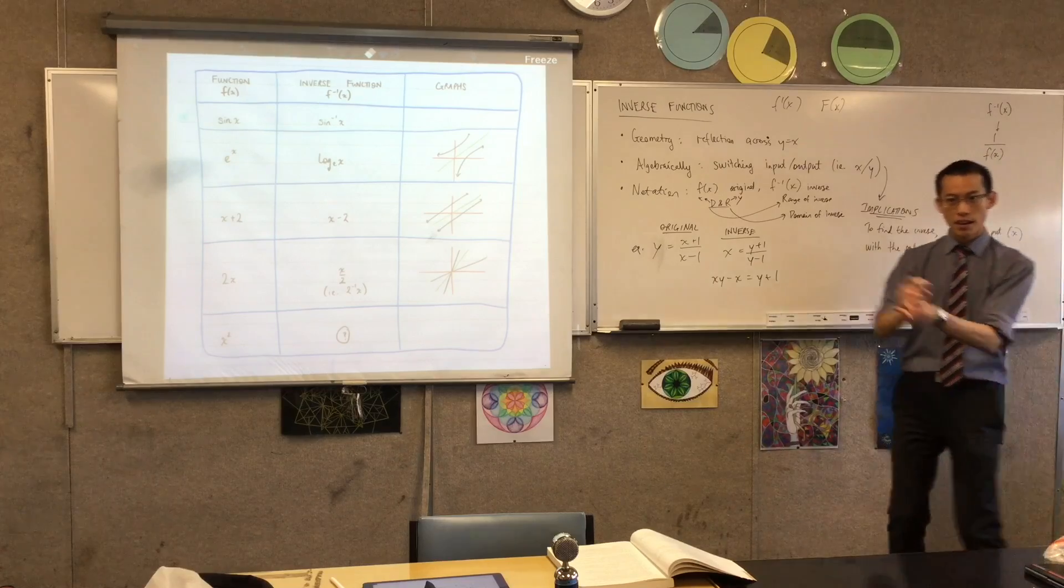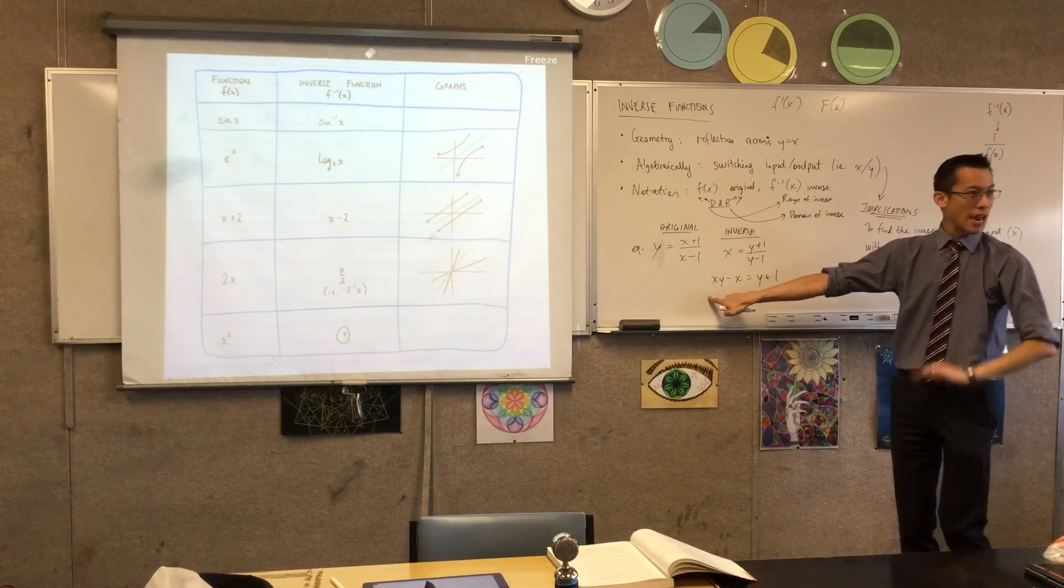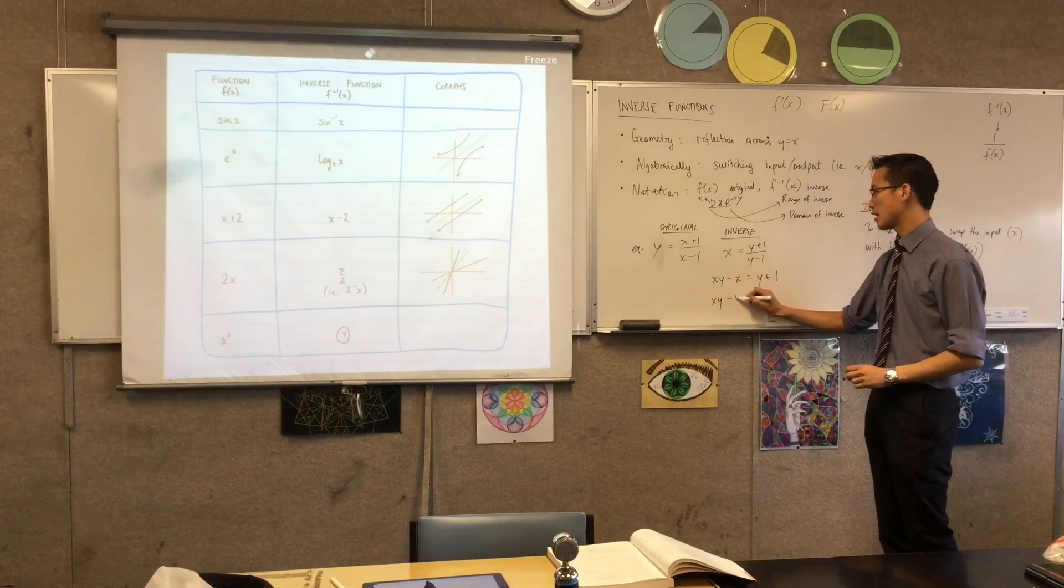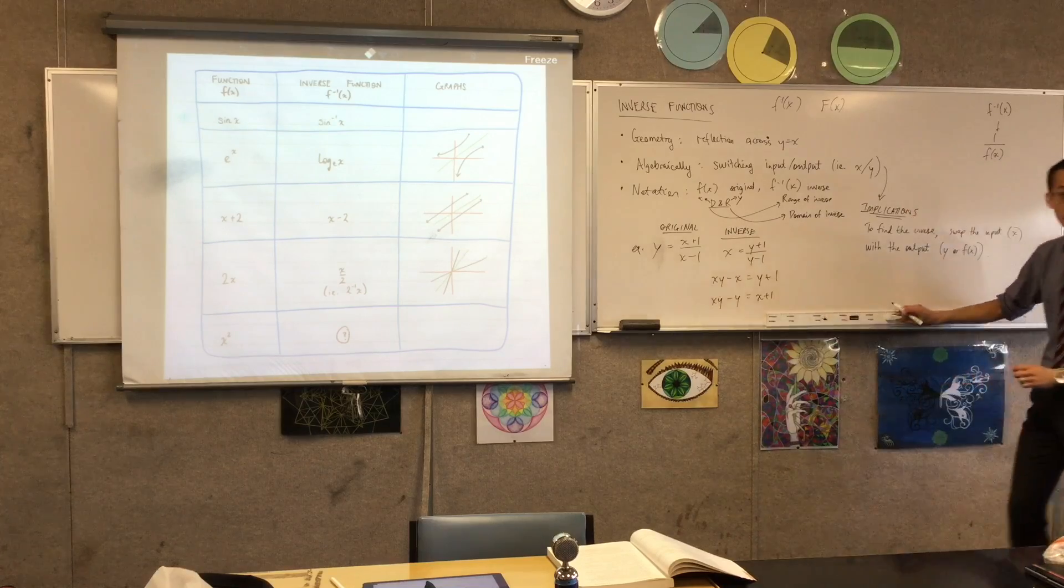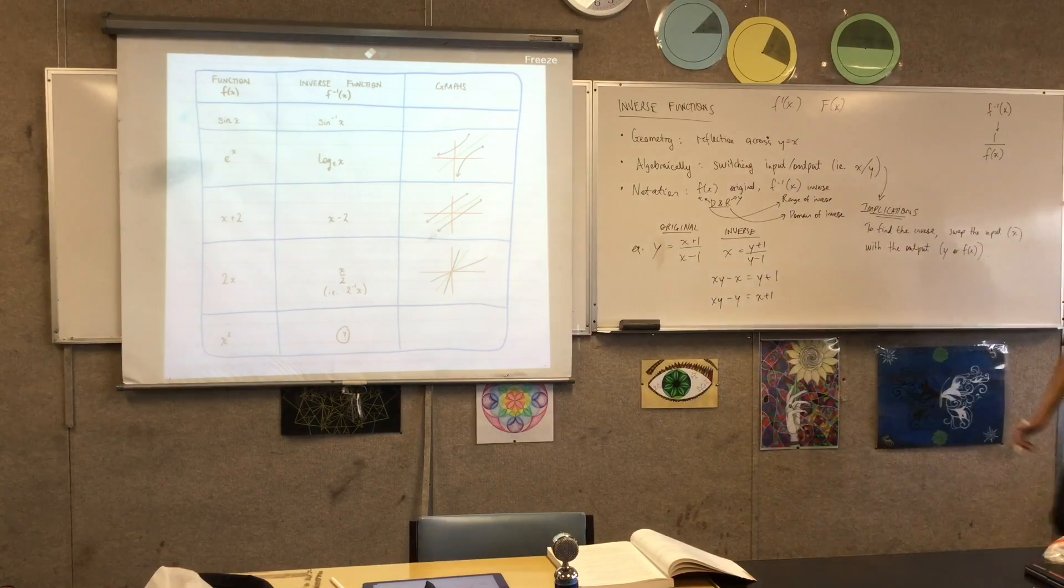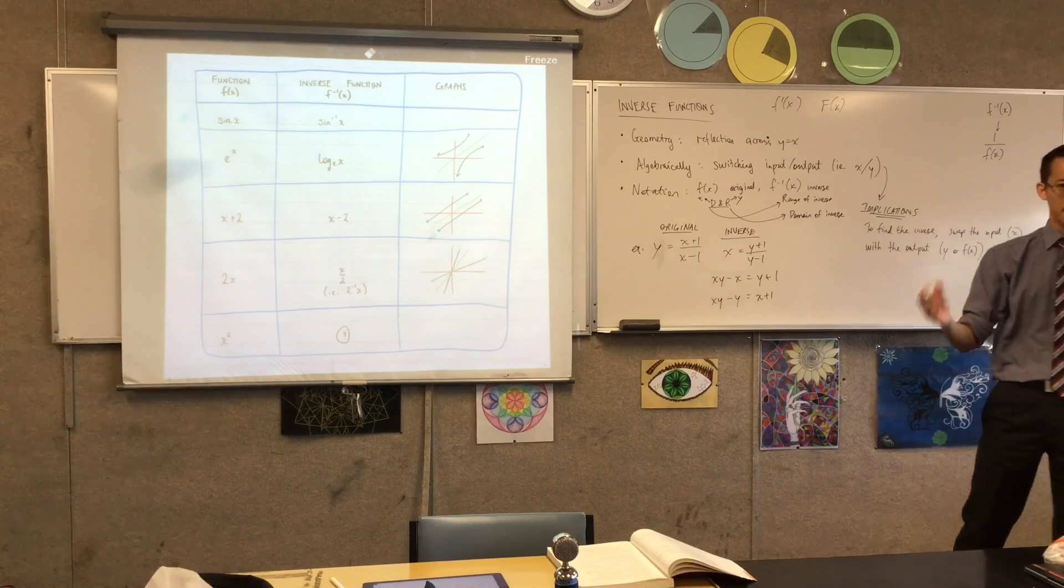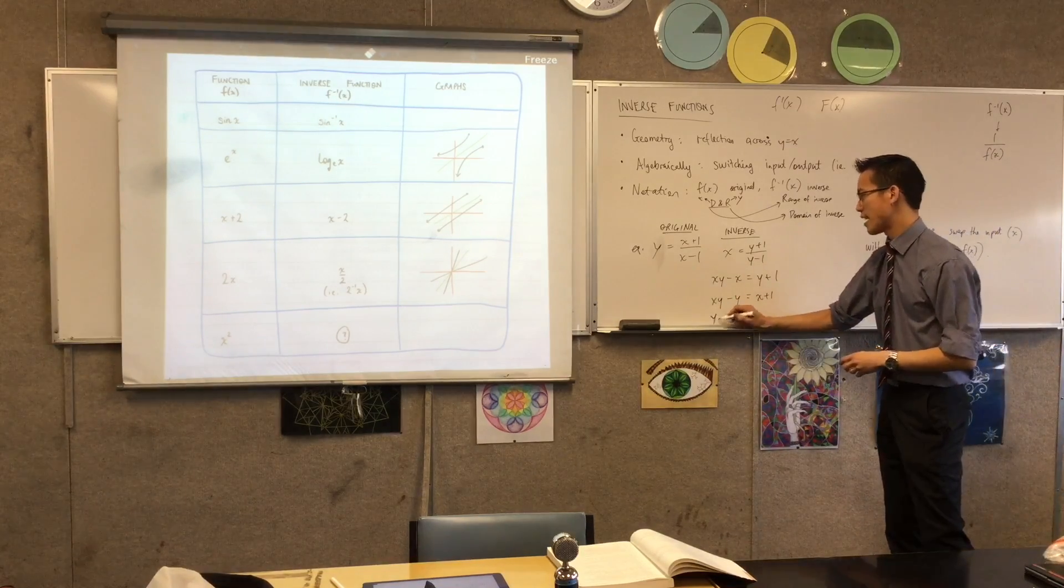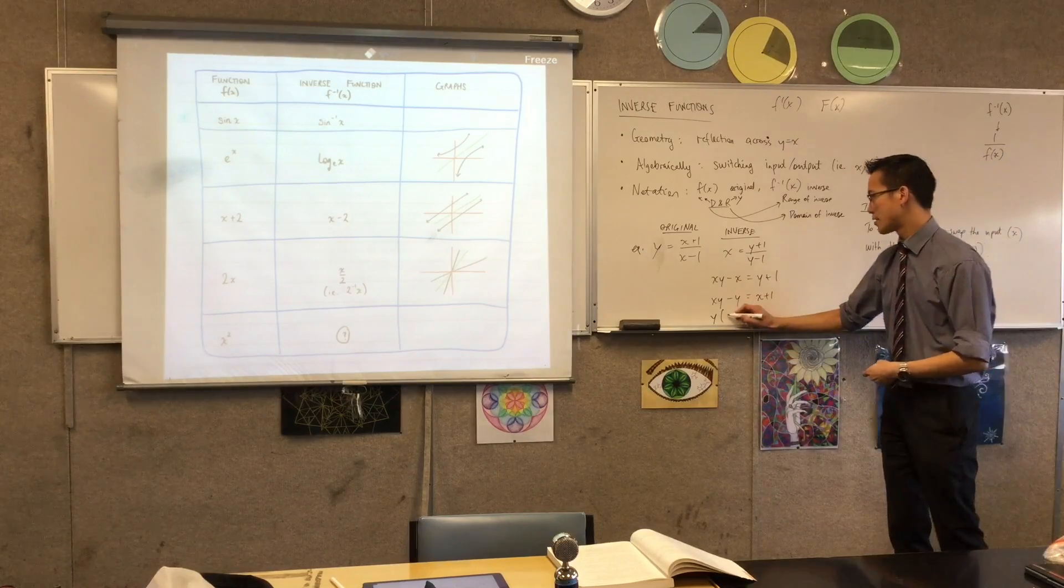If I want to make y the subject, what am I going to have to do next? Take everything, take all the y's. Yeah, I'm gonna need to collect like terms. Yeah, so I need all the y's over here and everything else on the other side. So if I say xy take away y, that looks like x plus 1. Are you happy with that? The reason for collecting like terms was so I can, well, before I make it the subject I need to factorize out, don't I?